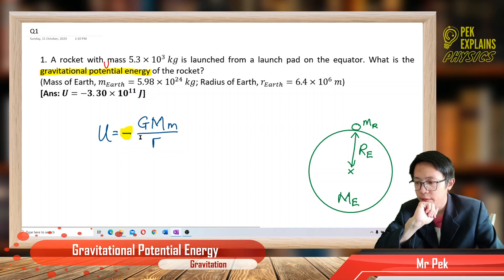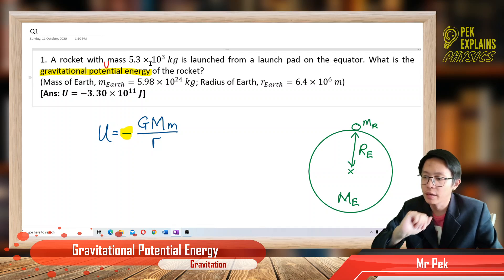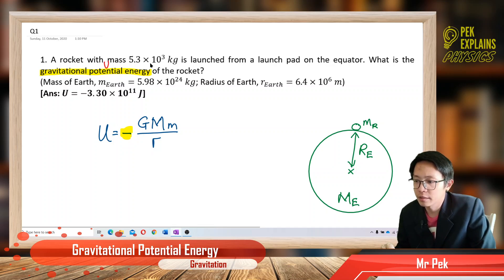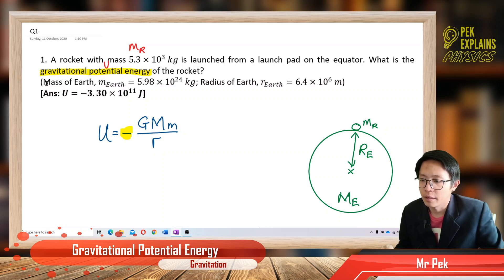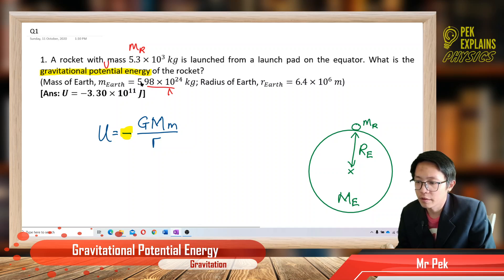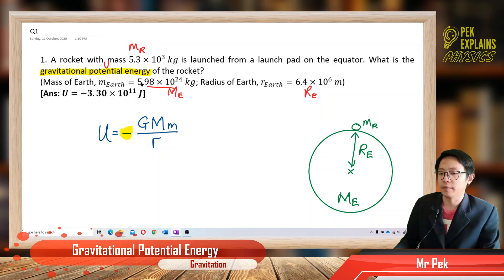So what information is given? It gives us the mass of the rocket. And we have the mass of Earth. And also, this is the radius of Earth.